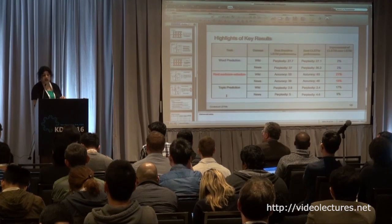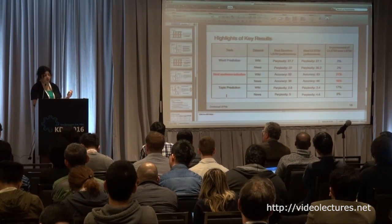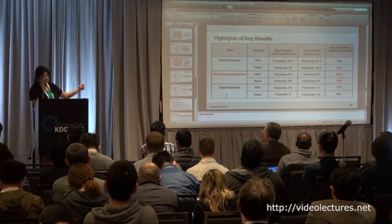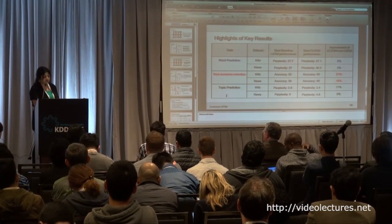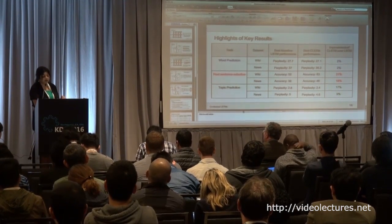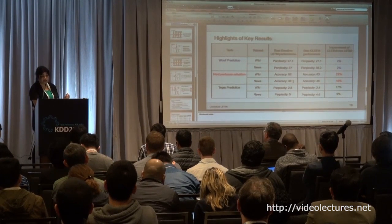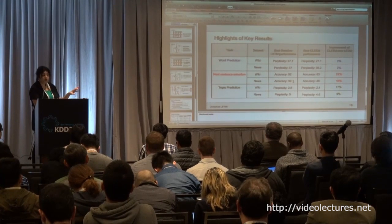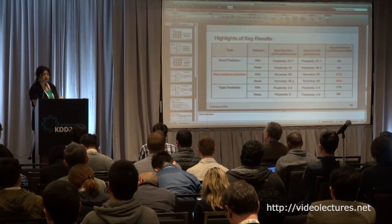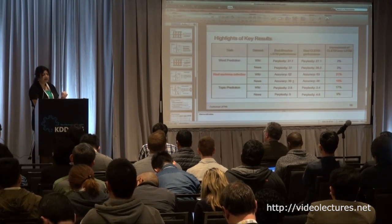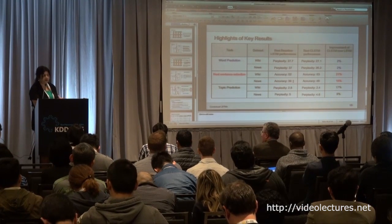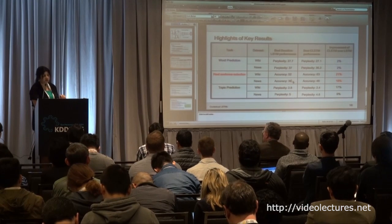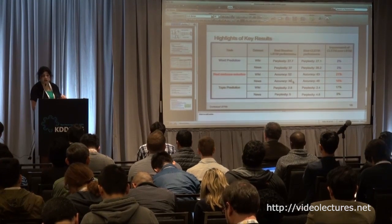For the topic prediction task — the harder version where we predict the topic of the next sentence given what we've seen so far — we get about 17% gain over a normal LSTM on Wikipedia. We also did experiments with bag-of-words and got about 11–12% gain. For the Google News dataset, we have about 9% gain over a normal LSTM.